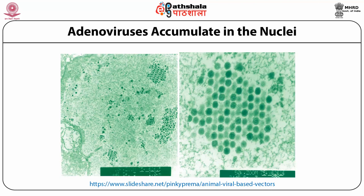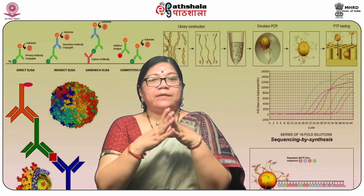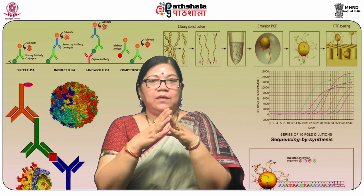Viruses have the property that they hijack the machinery of the host cell. Once they enter, they give signals commanding the host cell machinery to stop functioning for itself and start working for the virus. Whatever proteins are required by the virus are generated by the host machinery — this is the hijacking of host machinery to produce proteins and components for virus development. These adenoviruses accumulate in the nuclei, as seen in the picture.